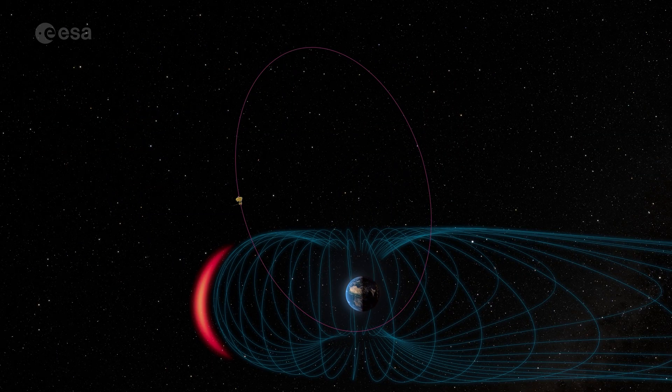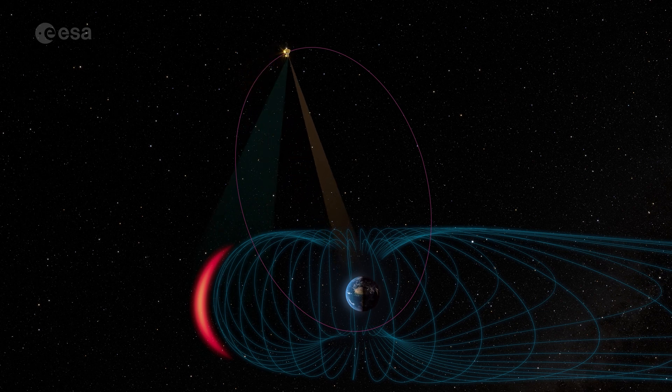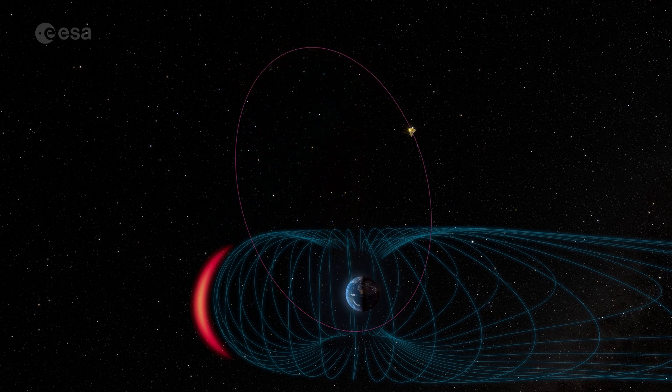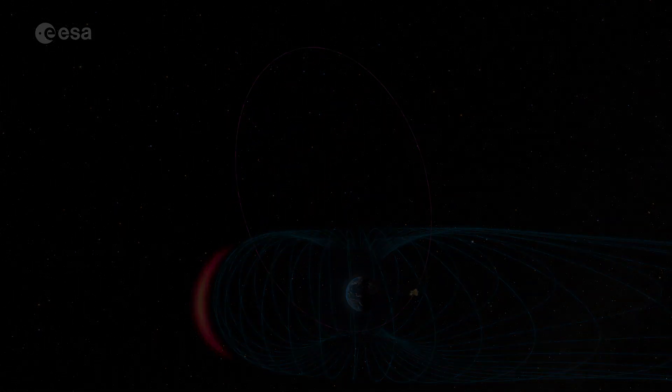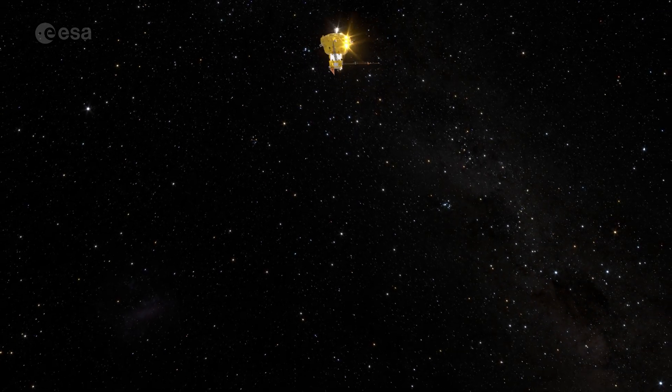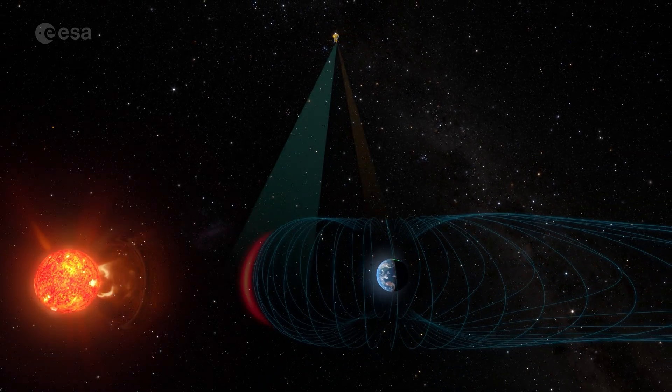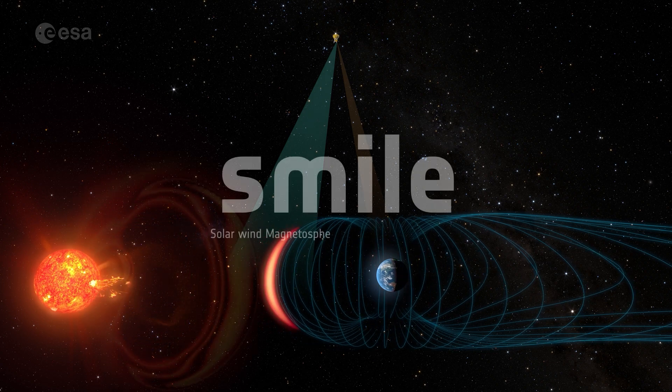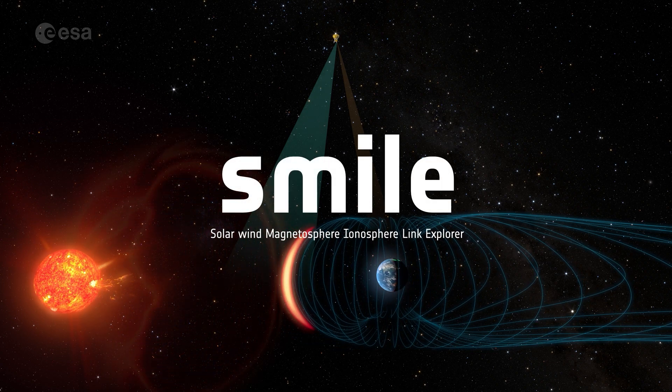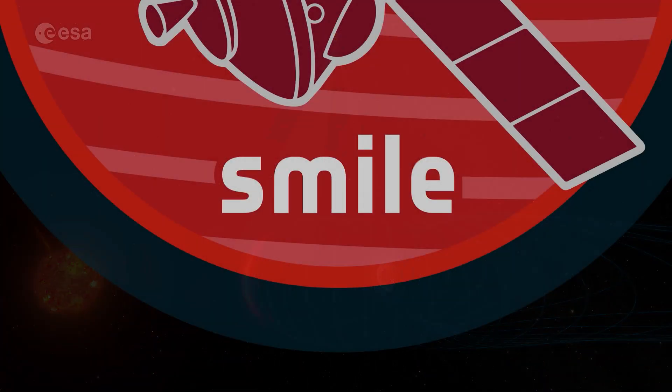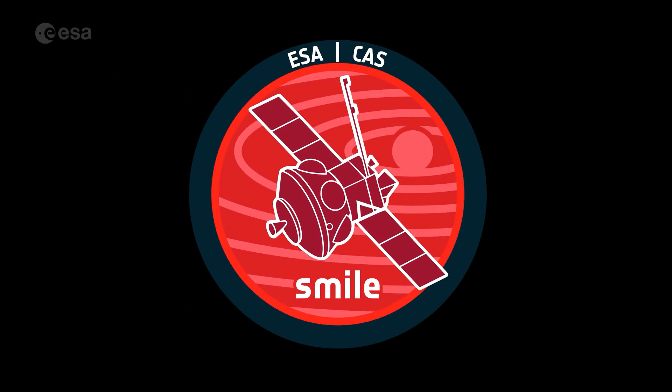Scientists will dig deep into this data to find out more. They will tackle big questions, like what happens where the solar wind meets Earth's magnetic shield? What causes magnetic glitches on the dark side of Earth? And how can we predict the most dangerous threats in advance?